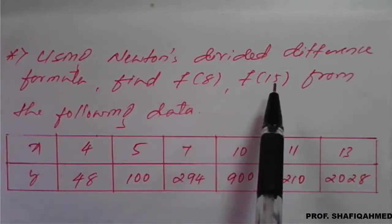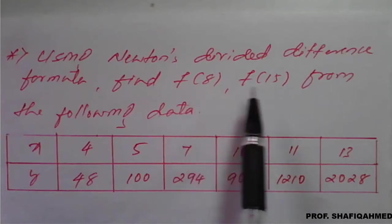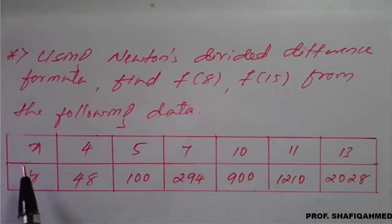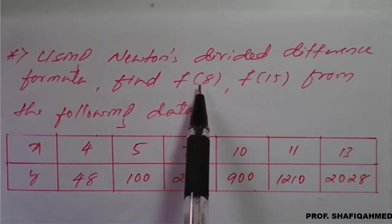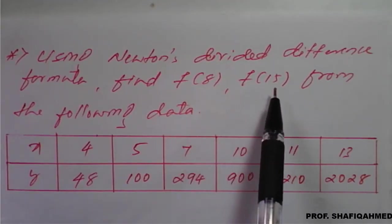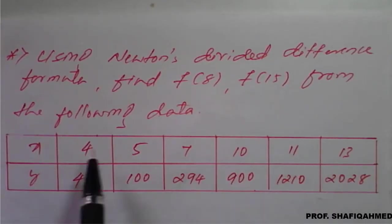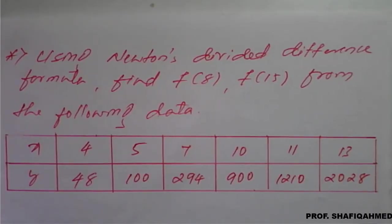They ask us to find f of 8 and f of 15. This is unequal data, so we cannot apply forward or backward difference. We need to use only Newton's divided difference formula. Instead of applying the formula twice, we will prepare a polynomial from the given data, and in that polynomial we will substitute x equal to 8 and x equal to 15 to get the answers.